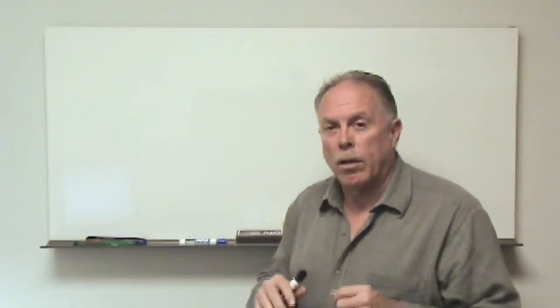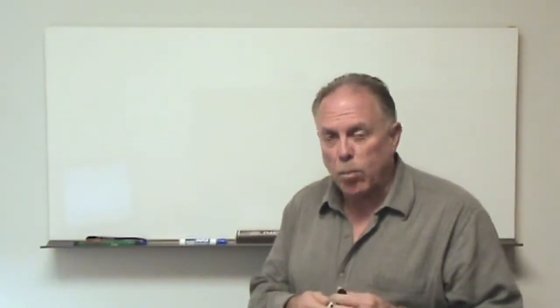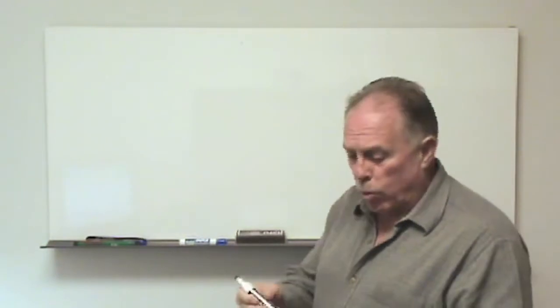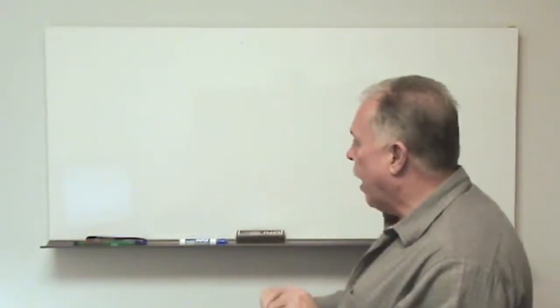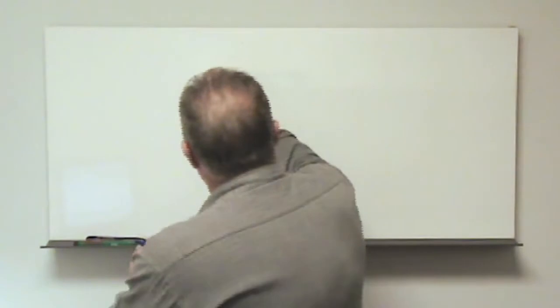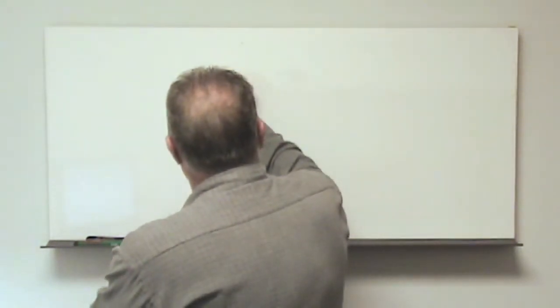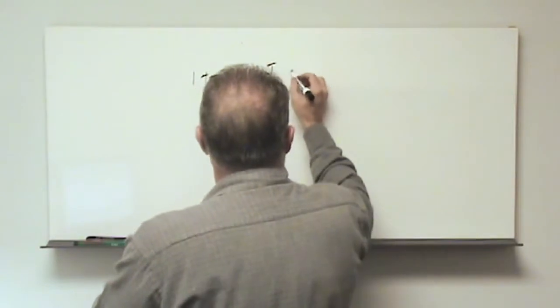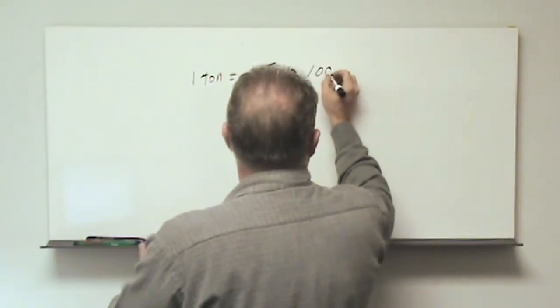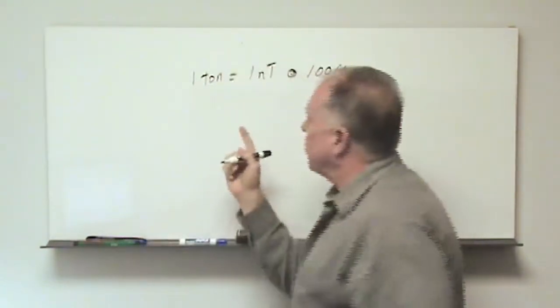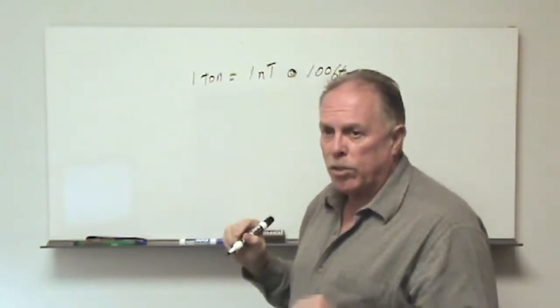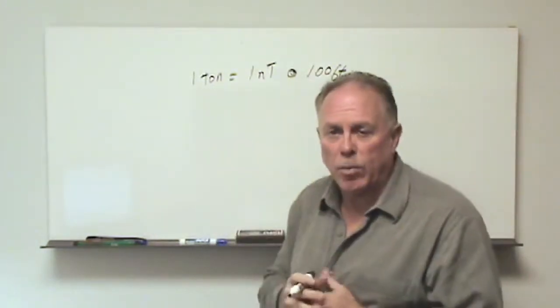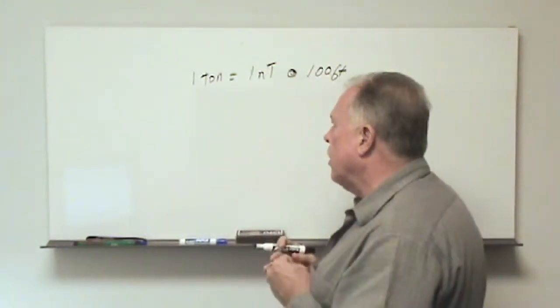I want to go over a couple of other points that need perhaps a little more explanation regarding the rules of thumb that I discussed in the past. The first one is that one ton of ferrous material equals one nanotesla at 100 feet. You'll remember that this is the induced formula to give us the size of anomalies that we get from various targets.